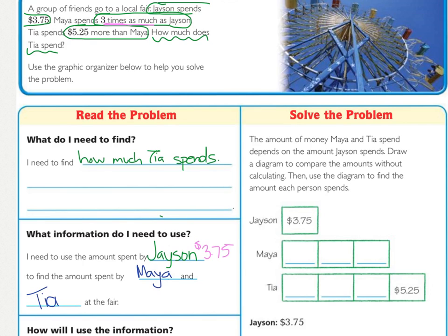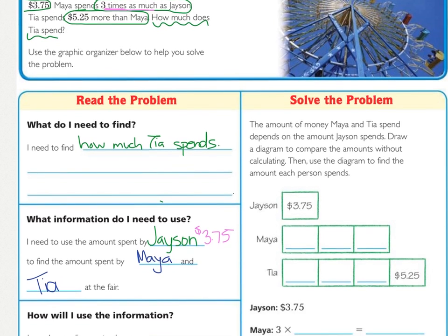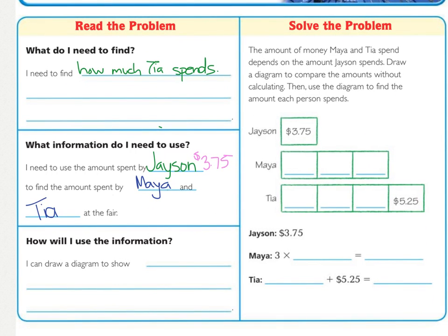And so, that's the information that we're going to start with. And then, the last thing that it says is, how am I going to use that information? I'm going to draw a diagram to show how much each person spent. And, all of this is important because, how much Tia spent at the fair, which is what we're being asked, is dependent upon us knowing how much Jason and Maya spent.